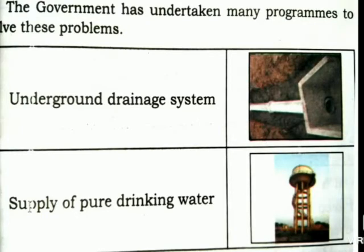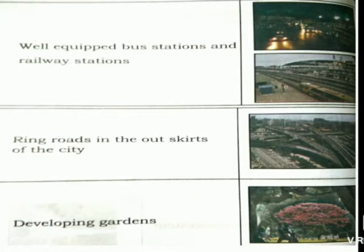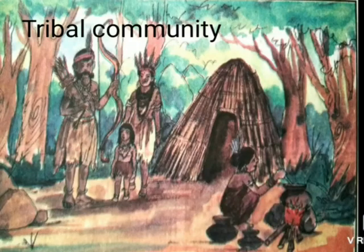The government has taken some undertaking programs: underground drainage systems, supply of pure drinking water, well-equipped bus stations and railway stations, ring roads on the outskirts of the city, and developing gardens for fresh air and shade. Ring roads help with transportation and bus stations ease public transport. The government has also provided education and hospital facilities for poor people.